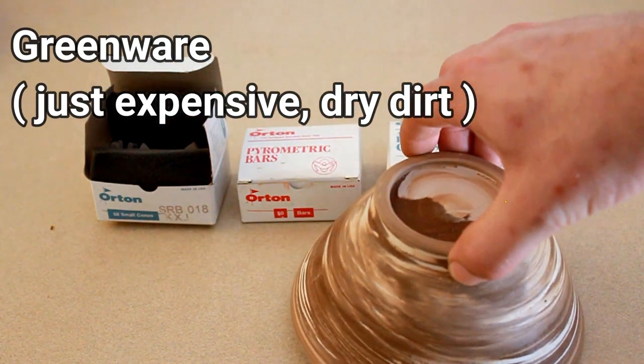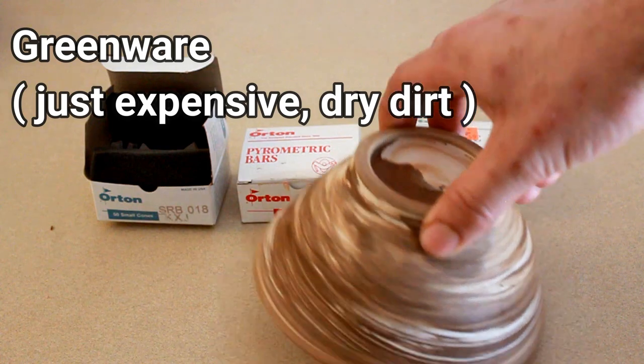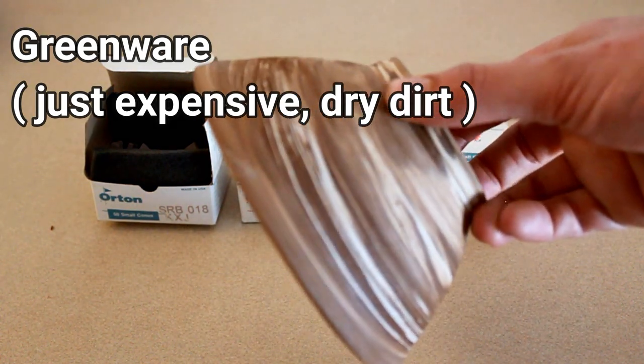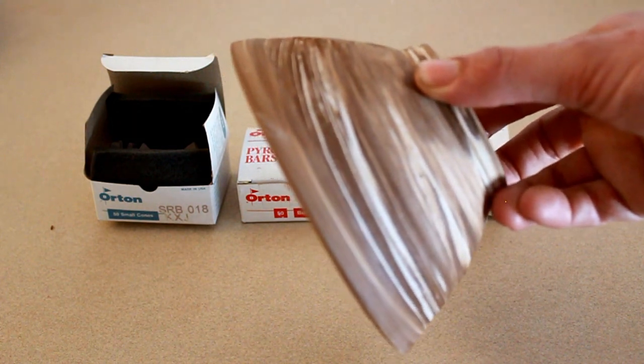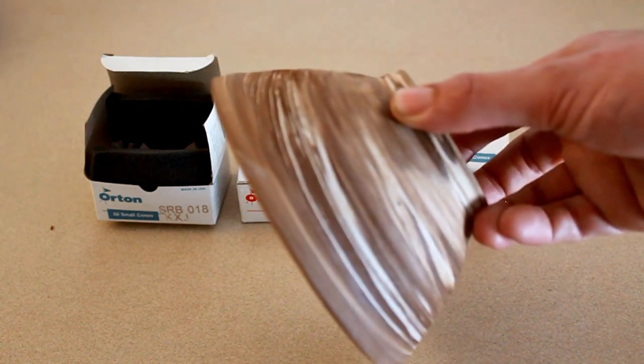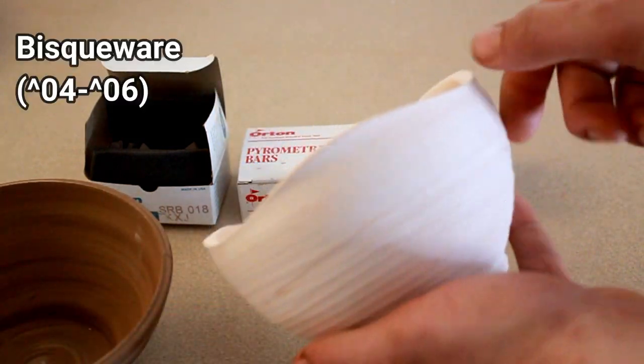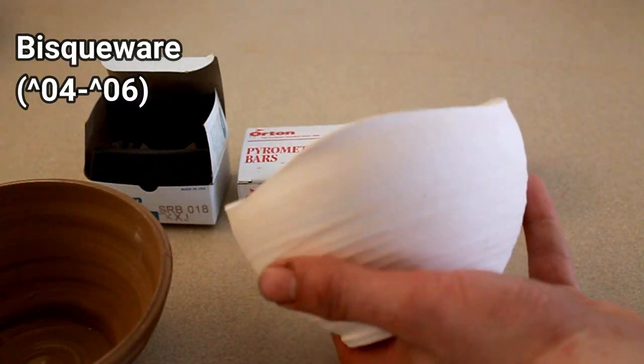But once I put it in the kiln at cone 04 or 06, all the water is going to be drained out of it. And it's going to have open pores. And these open pores are going to allow my glaze to be soaked into the body of my clay. And it goes from this to something like this. This is a lot harder. It's a lot stronger.